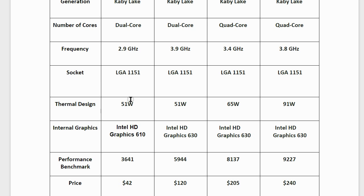For thermal design power: the Celeron and i3 are both 51 watts, the i5-7500 is 65 watts, and the i5-7600K is 91 watts. For integrated graphics: the Celeron has Intel HD Graphics 610, while all the Core i3 and i5 models have Intel HD Graphics 630. With integrated graphics, we don't need to buy a discrete video card, saving hundreds of dollars.